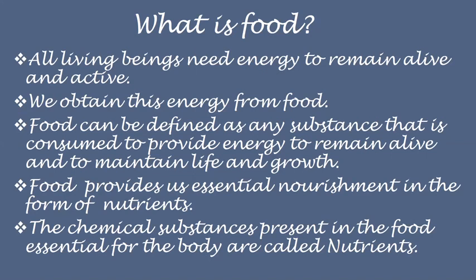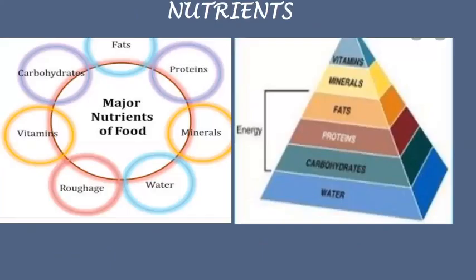Food provides us essential nourishment in the form of nutrients. The chemical substances present in the food that are essential for the body are called nutrients. The major nutrients of food are carbohydrates, fats, proteins, minerals, water, and vitamins.